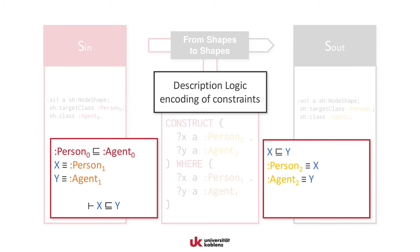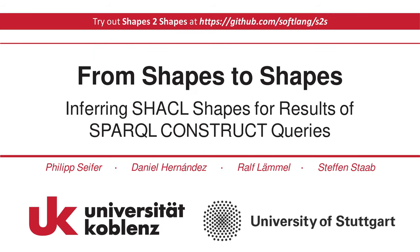Similarly, axioms can be inferred for a construct template. Finally, for constructing the set of result shapes, candidate axioms can be enumerated and checked for entailment by the inferred axioms. In this particular case, 'Person is subsumed by Agent' is entailed and the corresponding shape is included in the output. For more details on the internals of our method, please see the full paper.